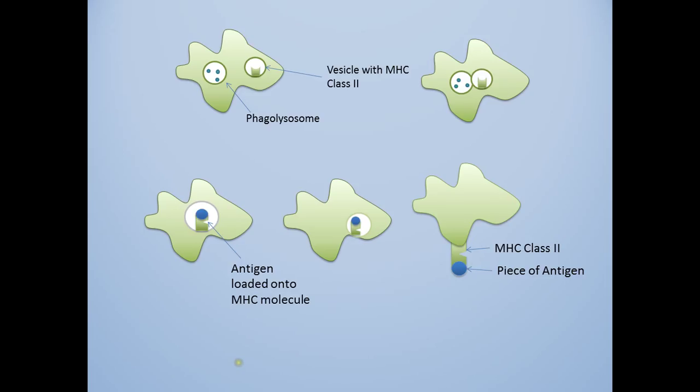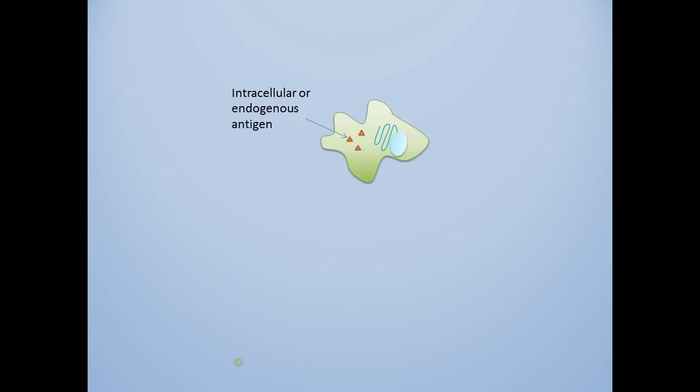In an endogenous or intracellular antigen, such as in cancer or a viral attack, the antigen originates within the cell. Therefore, the cell will use polypeptide fragments within its cytoplasm to get the antigen.